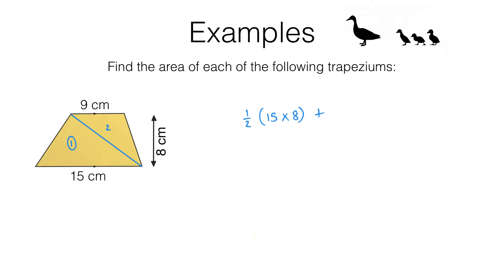This triangle here has a base of nine centimetres and a height of eight centimetres — it has the same height as the first triangle. So a half base times height means for the second one we're going to be doing a half of nine times eight.